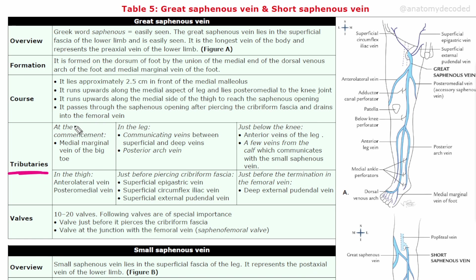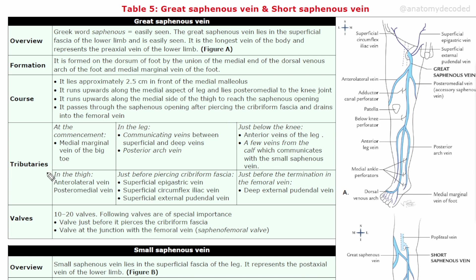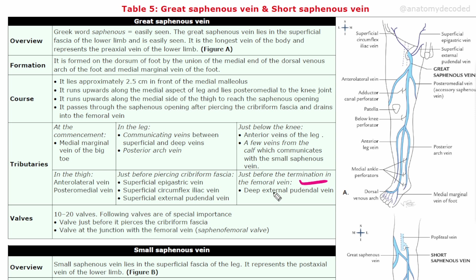The great saphenous vein has multiple tributaries. At its commencement, the tributary is the medial marginal vein of the great toe. In the leg, there are communicating veins between the superficial and deep veins, a vein called the posterior arch vein, anterior veins of the leg just below the knee, and two veins from the calf communicating with the small saphenous vein. In the thigh, there is the anterolateral vein and posteromedial vein. Just before piercing the cribriform fascia, three superficial veins drain in: the superficial epigastric vein, superficial circumflex iliac vein, and superficial external pudendal vein — corresponding to the three superficial branches of the femoral artery. Just before termination, there is also the deep external pudendal vein.